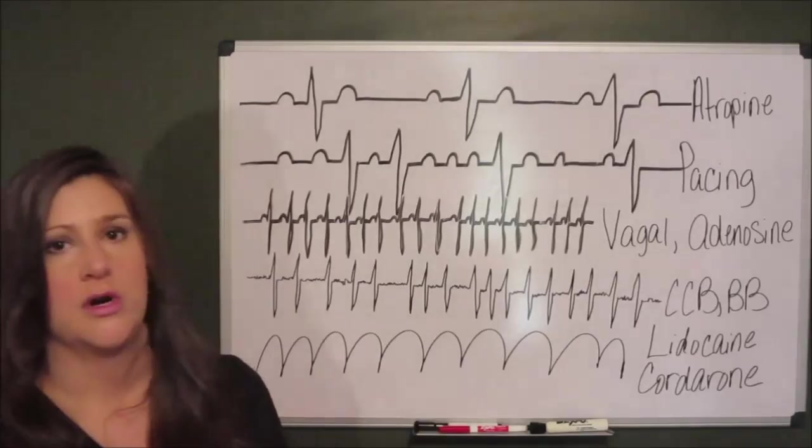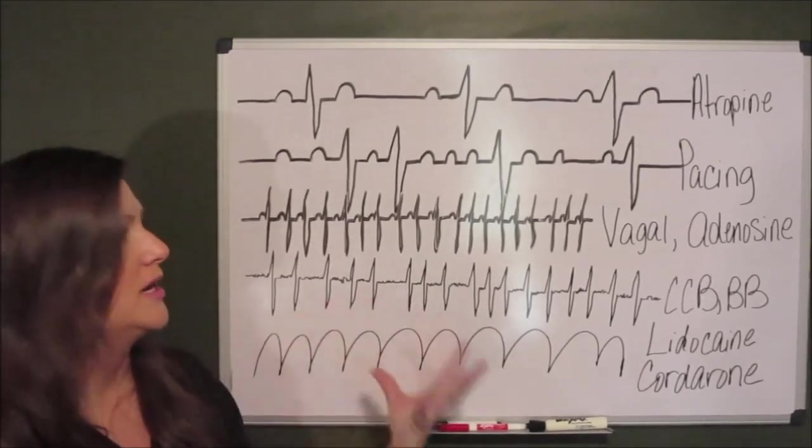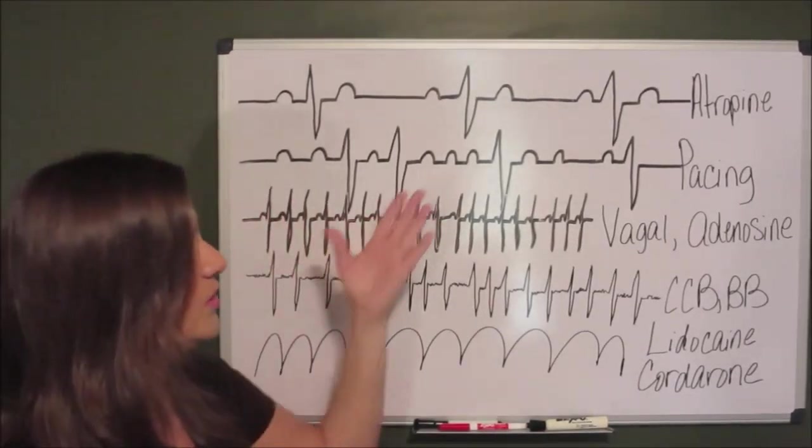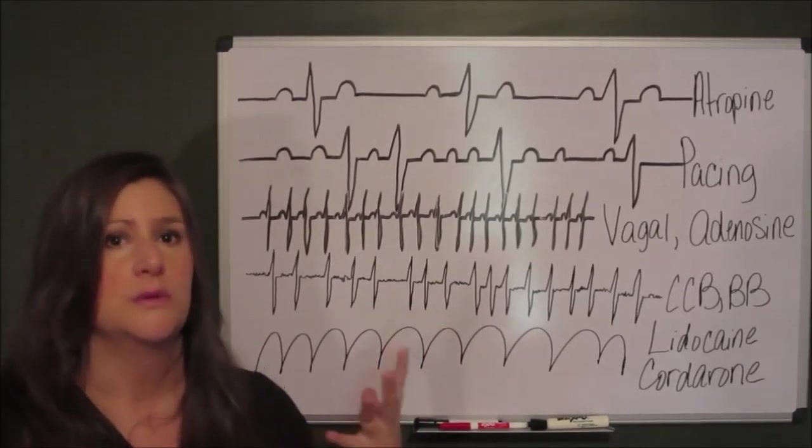Atropine is not going to work. There is no communication whatsoever between your SA node and your AV node. So the only way to fix 3rd degree is to pace your patient until we can get a permanent pacer. If you are giving atropine, it would do absolutely nothing.